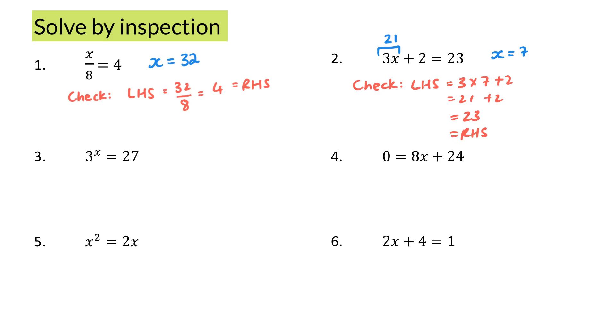Now the next question says 3 to the power of x is 27. What I'm asking is 3 times 3 times 3 times 3, how many times, is 27? So surely, x must be 3, because 3 to the power of 3 is 27.